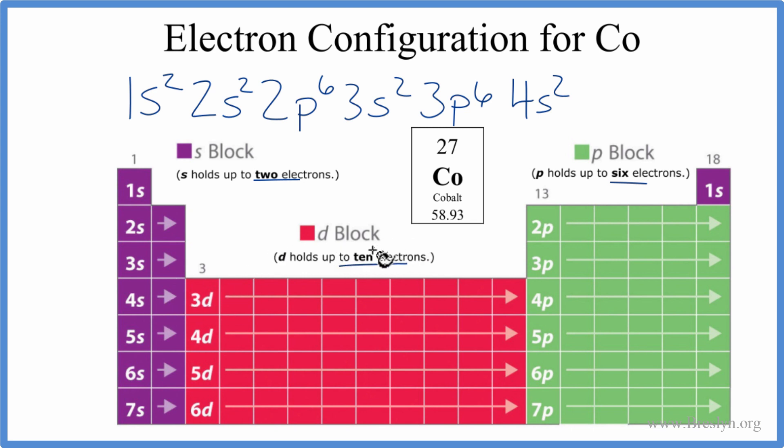D can hold up to 10 electrons, but we don't need 10 electrons. Since we have 20, we only need 7 more to get our 27, so we'll put 3d7. And this is the electron configuration for CO, cobalt.